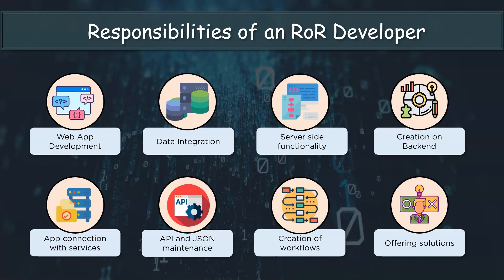Responsibilities also include collaborating with several departments to create workflows and tighten management procedures, and determining bottlenecks and offering solutions to issues that have been found. Other generic skills like critical thinking, analytical skills, and problem solving are also important for a Ruby on Rails developer. Good communication and transparency are equally valued. These are some of the responsibilities of an ROR developer.